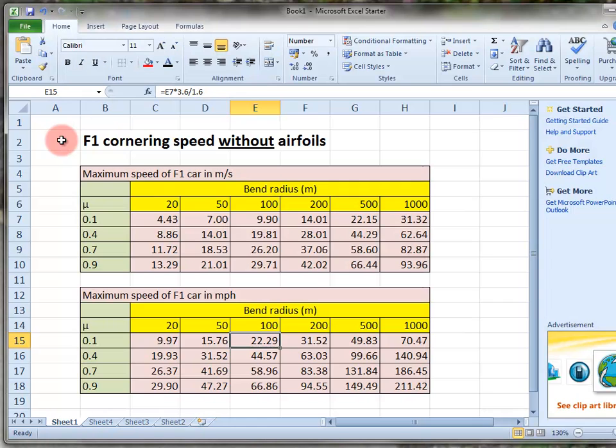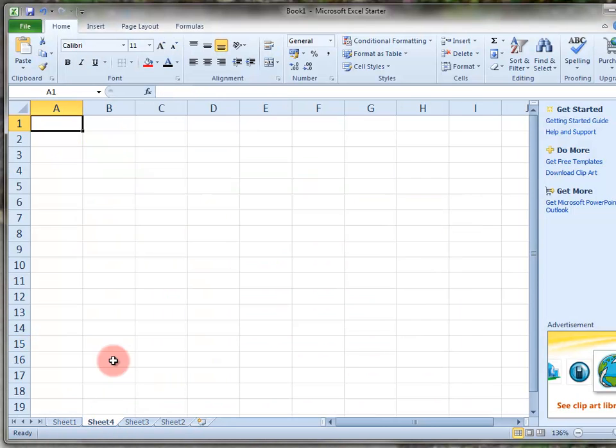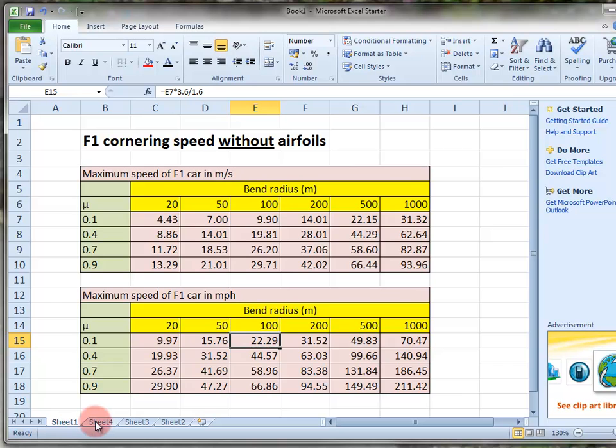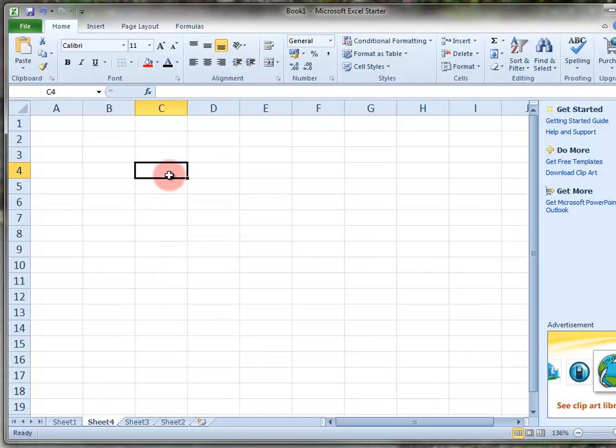So let's go back to the spreadsheet. Start off by creating a new table. We're going to put in the values. So we want 20 going up to 1000.